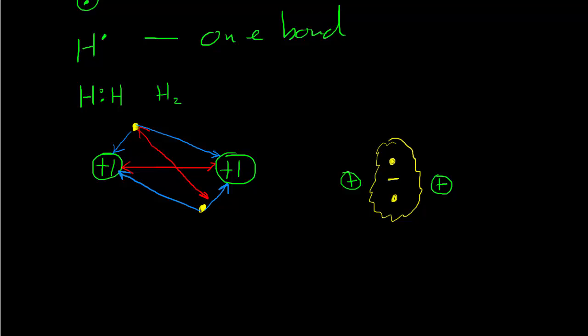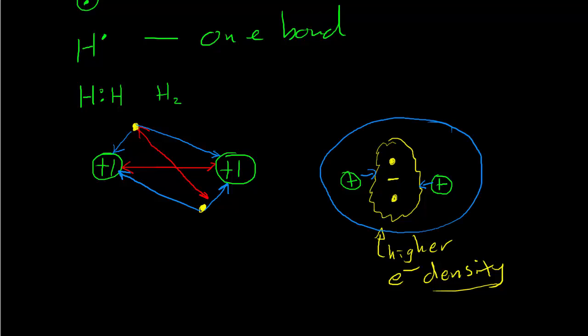The electrons are buzzing all around — sometimes over here, sometimes over there — but we imagine they spend a little more time in between. We build up the electron density, where electron density is the number of electrons per unit volume. There is a higher density of electrons between the two atoms, and it's that net attractive force of the two nuclei to this electron cloud that holds the whole molecule together. That's how covalent bonding works and how sharing electrons and building up electron density between nuclei can help stabilize a structure and form a molecule.